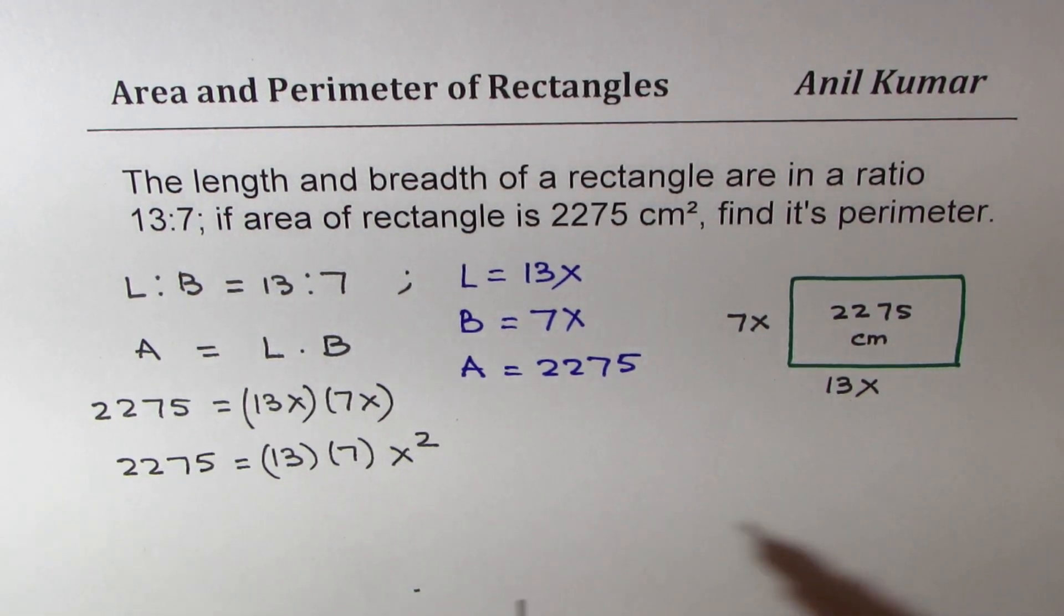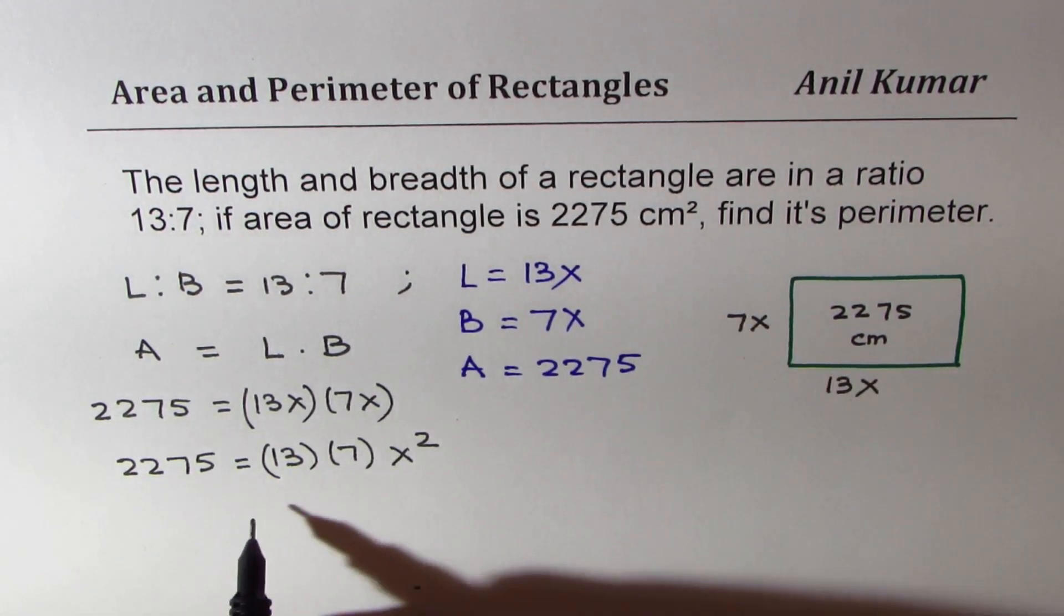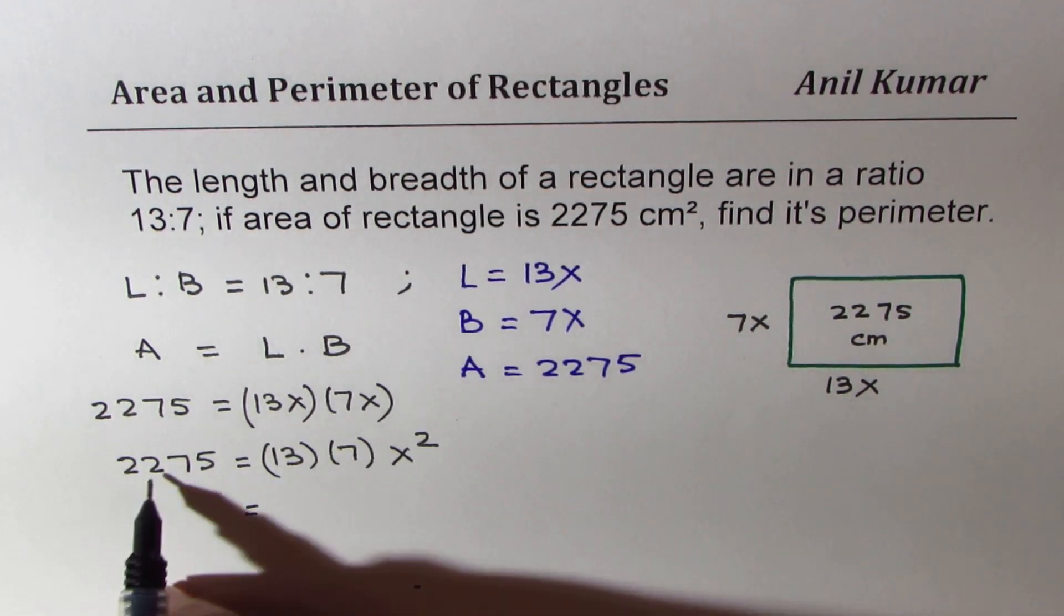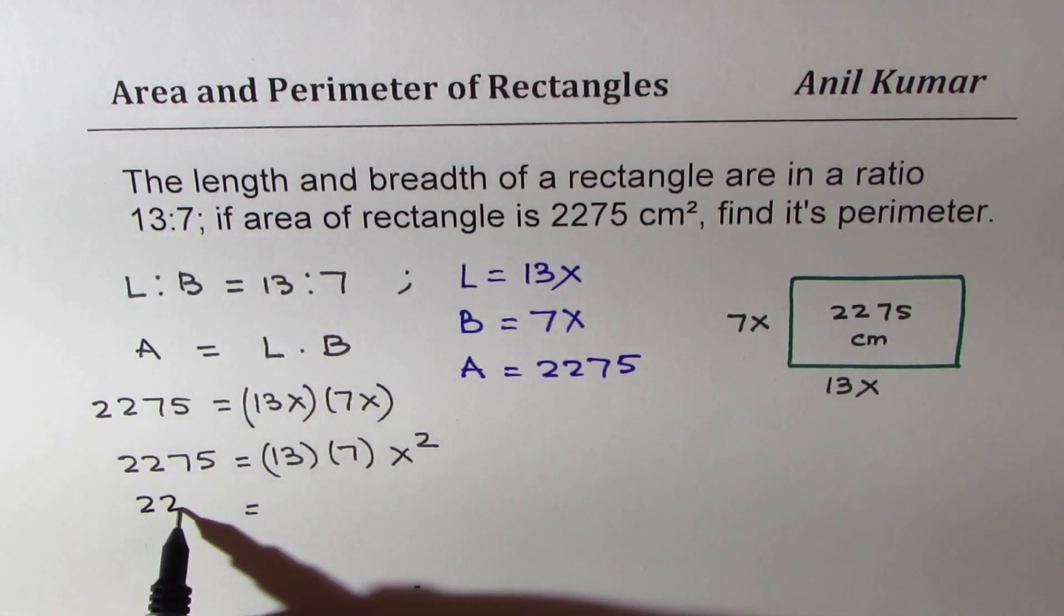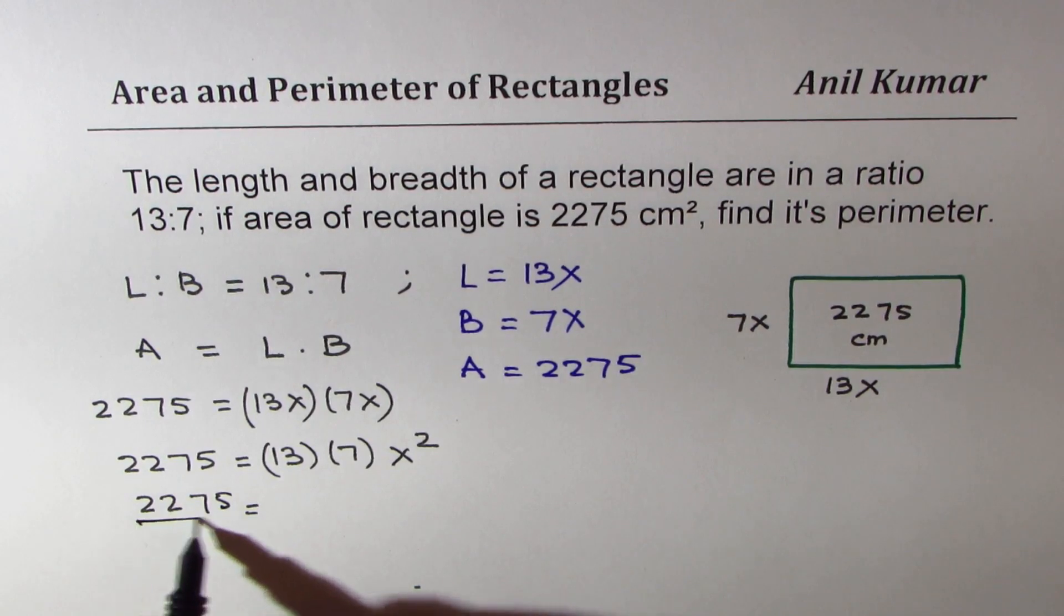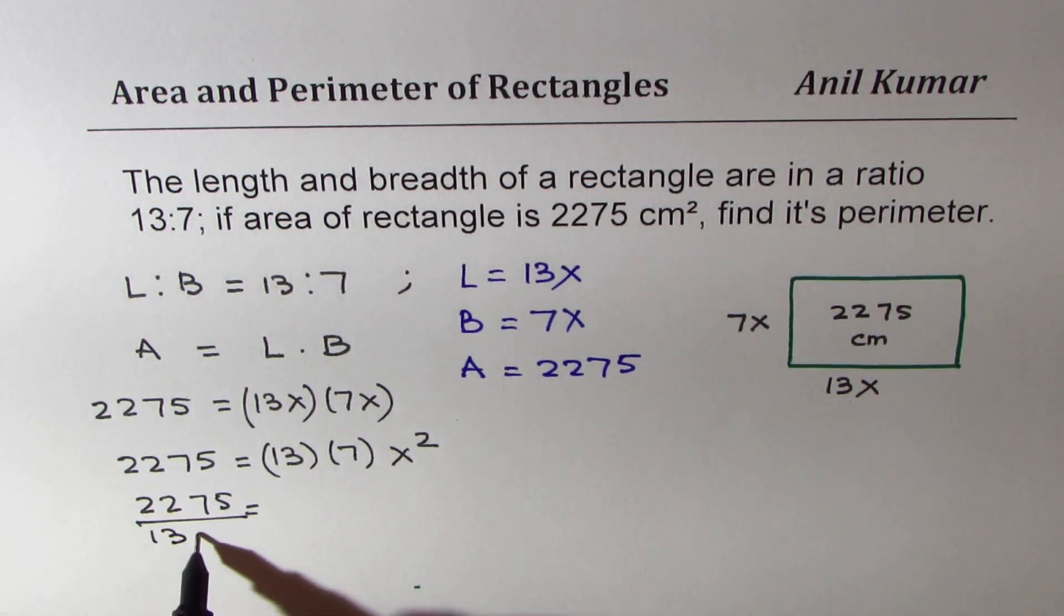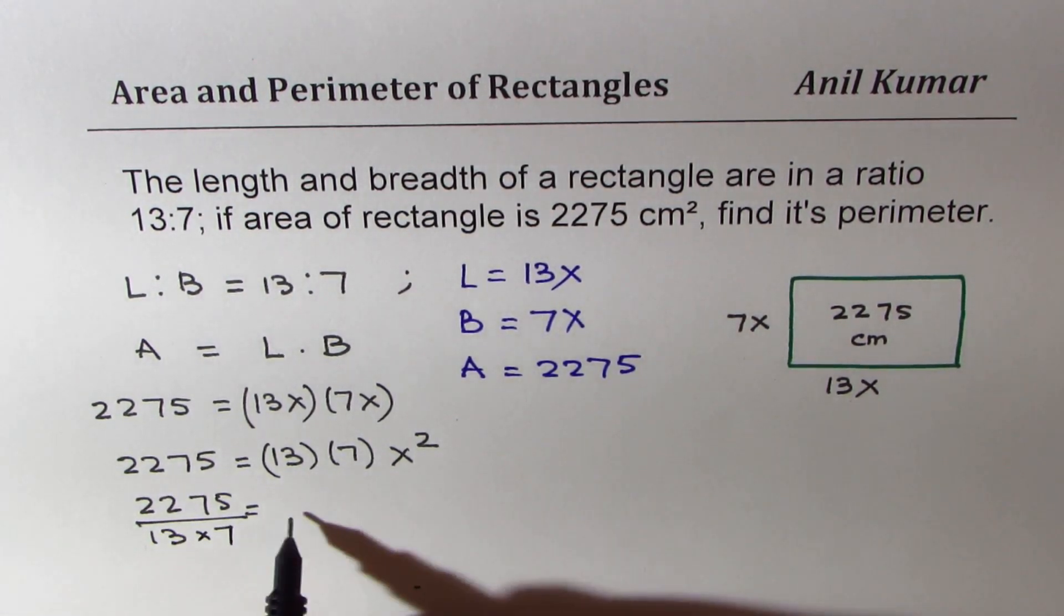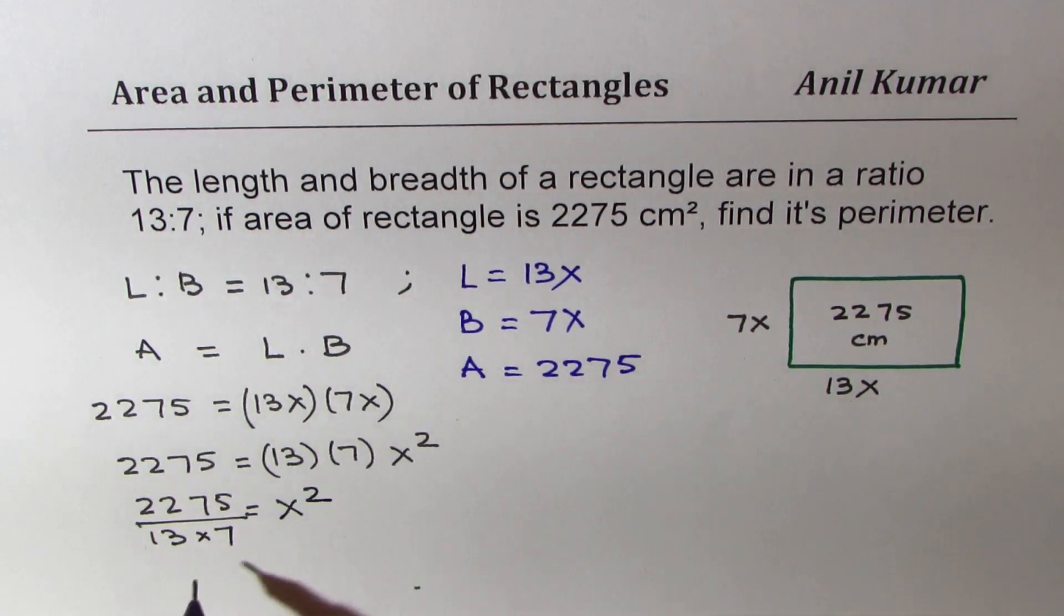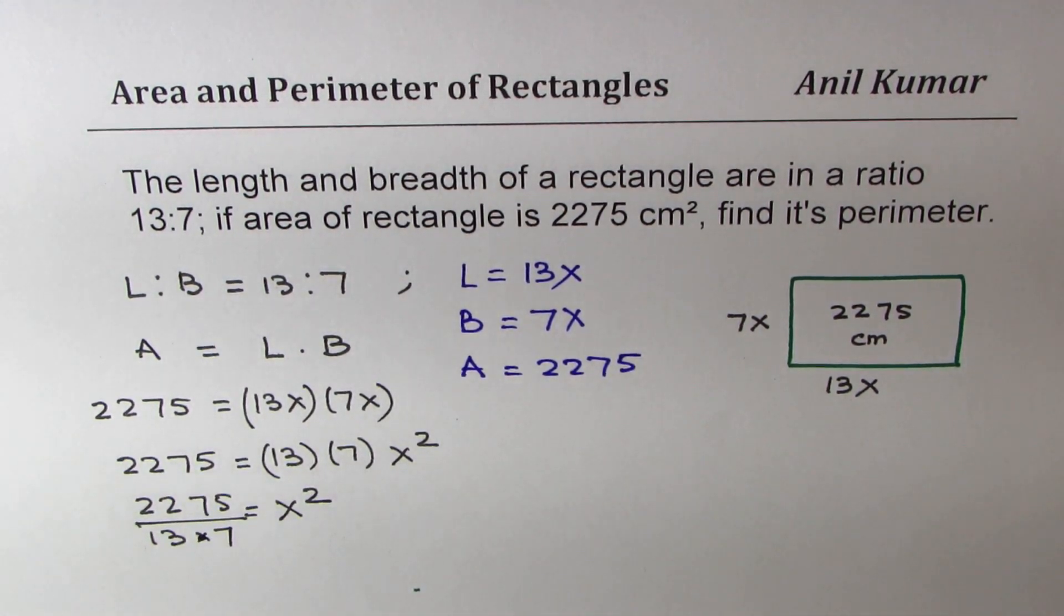Now to find x, the constant ratio, we need to divide by 13 and 7 on the left side. So we get 2275 divided by 13 times 7. And this is equal to x squared. Now you need to simplify this. You can use calculator at this point to find this answer.